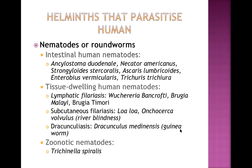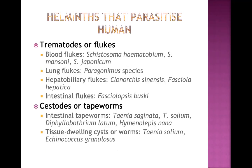The last nematode group is zoonotic nematodes - Trichinella spiralis. We get this from animals; cats are an important reservoir for Trichinella spiralis.